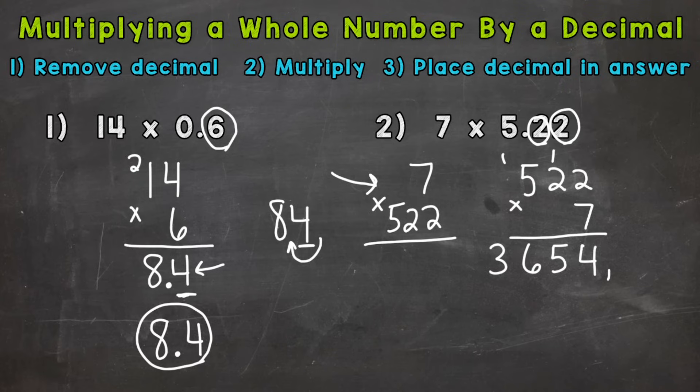We can think of it like this. Bring it in one, two. That will give us two digits behind the decimal. Or you can go one, two, and place your decimal there. Either way, whatever works best for you. And we will rewrite our final answer without any marks under it. And we get 36 and 54 hundredths.